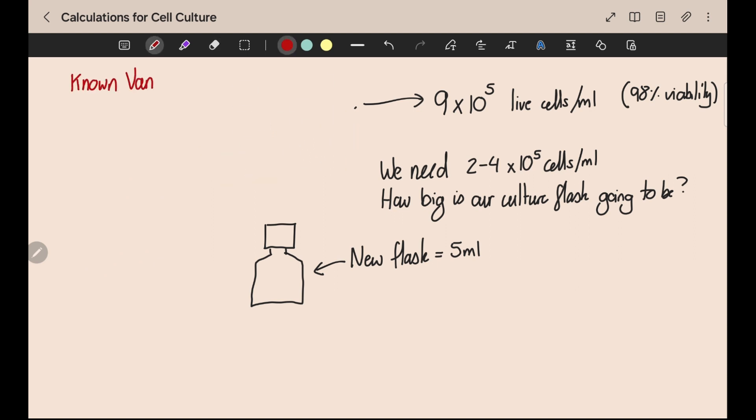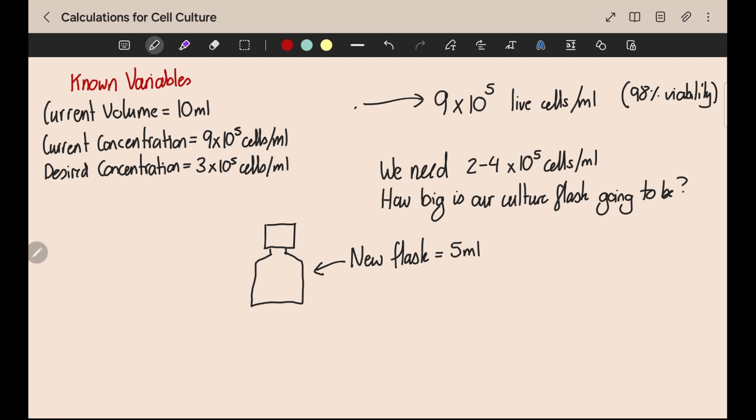The current volume which is 10 mils. Our current concentration which is 9 times 10 to the 5 cells per mil. Our desired concentration which remember was between 2 and 4 times 10 to the 5 cells per mil, so let's call that 3 times 10 to the 5 cells per mil. And our final volume which we've just said is 5 mils because we'll be using a small flask.